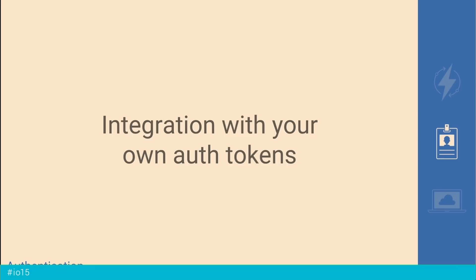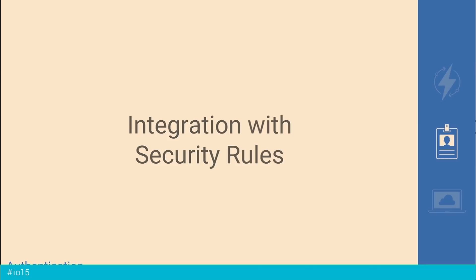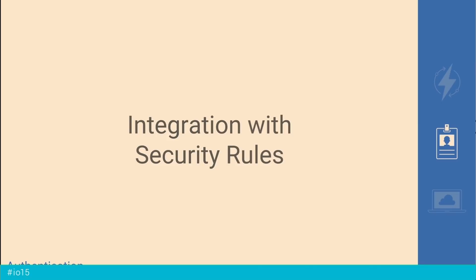If you're asking how to integrate Firebase auth with your existing user system, you can use one of our eight server-side libraries. You generate a JSON Web Token — another open standard — and that tells Firebase who your user is. Firebase authentication also works with our security rules. For example, using a $uid wildcard in a users node, you can say anyone can read a user's profile, but only the person logged in can modify their own profile. It's that easy with just a few lines of code.